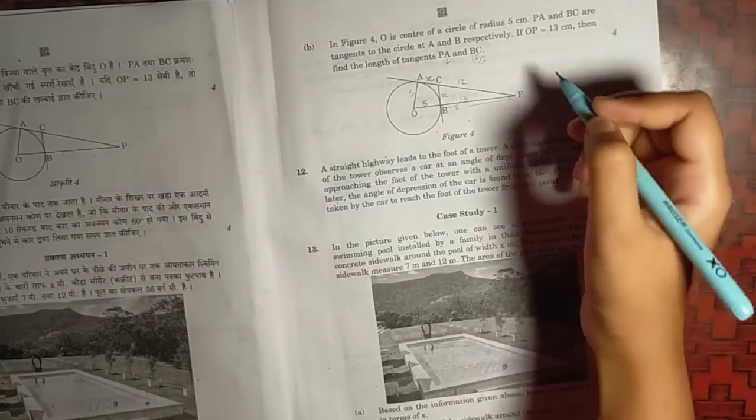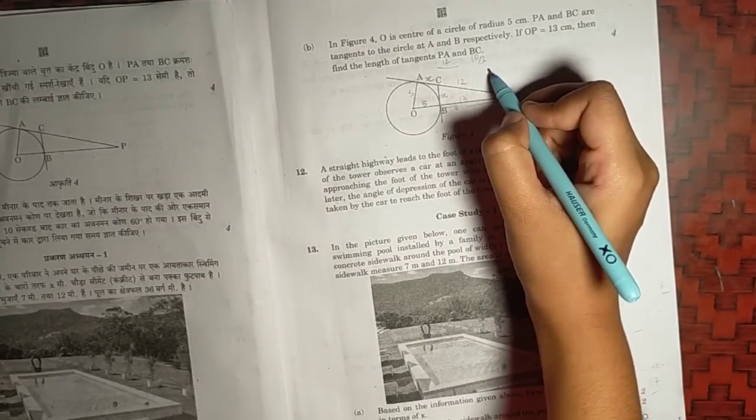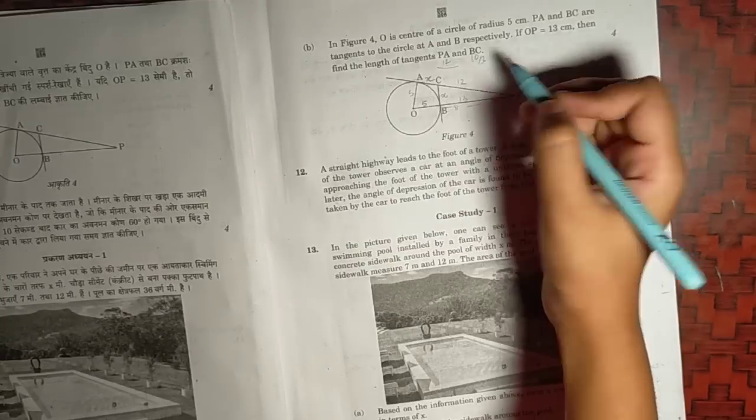Question number B of that eleventh question, we have AP equals to 12, and BC will be equal to 10 by 3. Both the units will be centimeter.